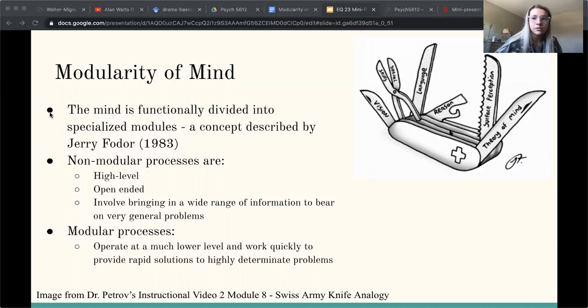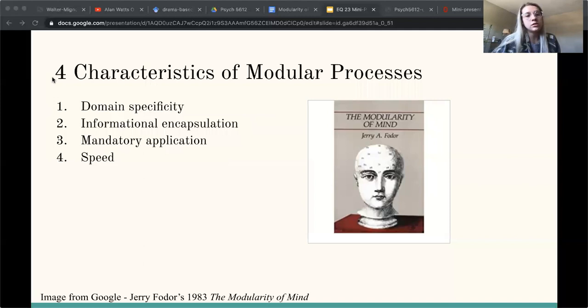Four characteristics of modular processes are: domain specificity, where they're highly specialized; and informational encapsulation, where modular processing is not affected by what is going on elsewhere in the mind.